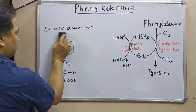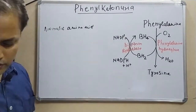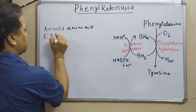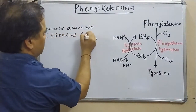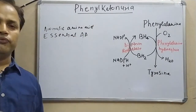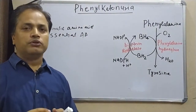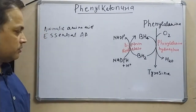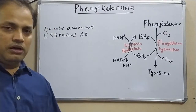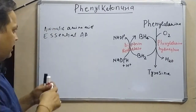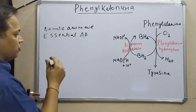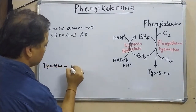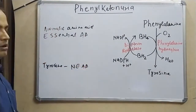Another feature of phenylalanine and tyrosine is that phenylalanine is an essential amino acid, meaning our body is unable to synthesize it. We normally take phenylalanine from the diet, from external sources. Tyrosine, on the other hand, is a non-essential amino acid.